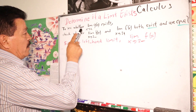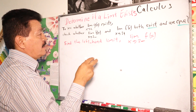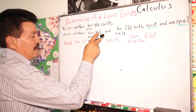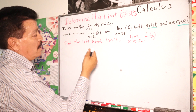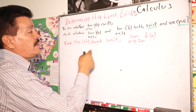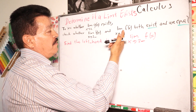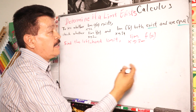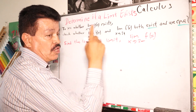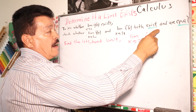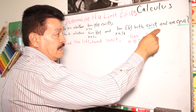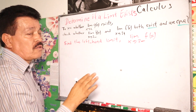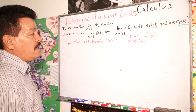We want to check whether the limit of G of X exists when X approaches a value. To do that, we check the left-hand limit and the right-hand limit. Both limits must exist and be equal for the overall limit to exist.